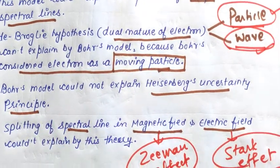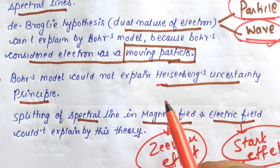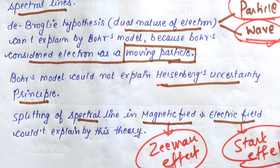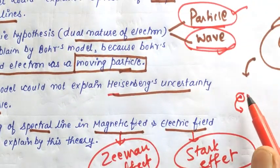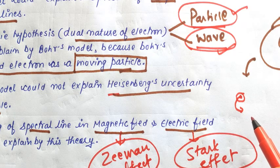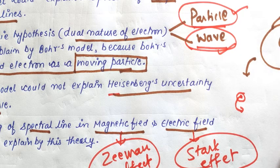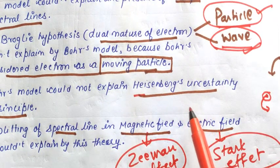The next limitation: Bohr's model cannot explain the Heisenberg uncertainty principle, which we will cover in the very next lecture. Heisenberg tells us that for any microscopic moving particle, its position and momentum cannot both be measured simultaneously with accuracy. Bohr calculated the radius — meaning the position — and also calculated the velocity of the electron in the nth shell, which contradicts this principle.